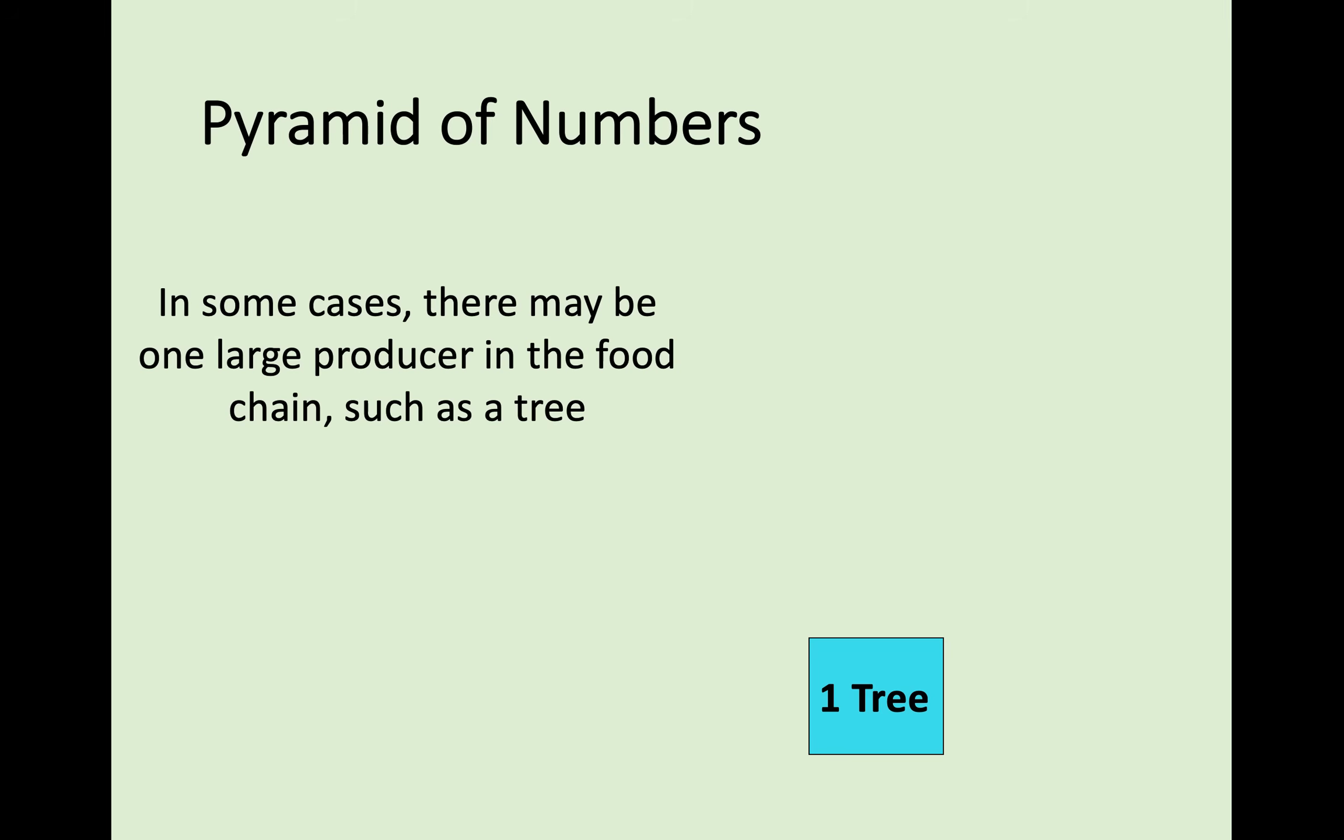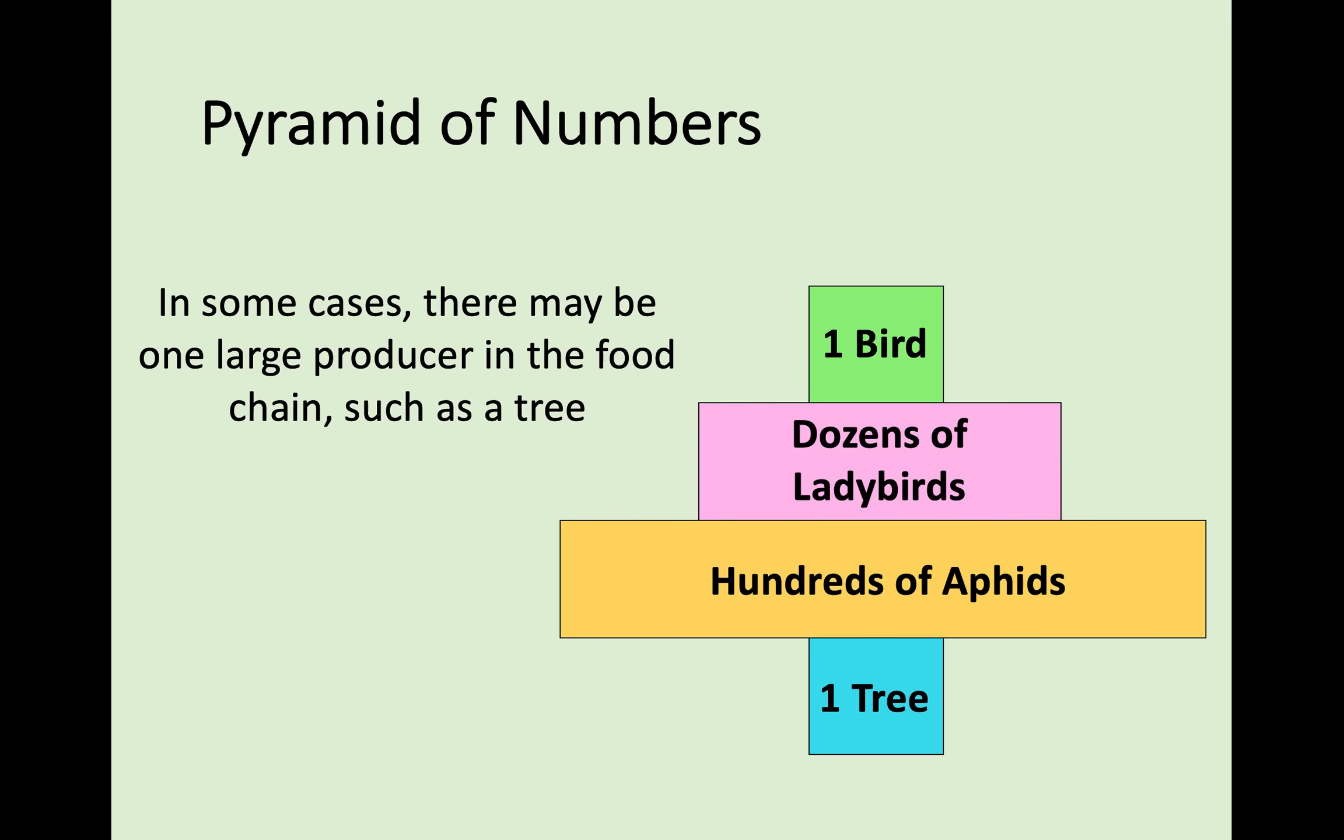What can sometimes happen is that you can have a very large producer in a food chain, and there's only one or a few of them. In this case, there could be a tree. The tree is a producer, it still needs to be on the bottom, but there's only one of them. From that one tree, hundreds of aphids, little plant-eating insects, could be gaining their energy. From those hundreds of aphids, dozens of ladybirds could be eating the aphids. And from those ladybirds, one bird could be eating the ladybirds. From the consumer side you're getting a pyramid shape, but it's an irregular pyramid because the one tree, in this pyramid of numbers, although it's providing a lot of energy and is a producer, there is only one of them. That's how it can look strange.